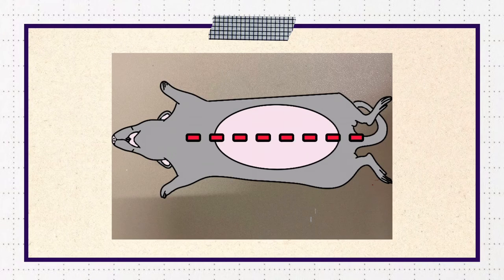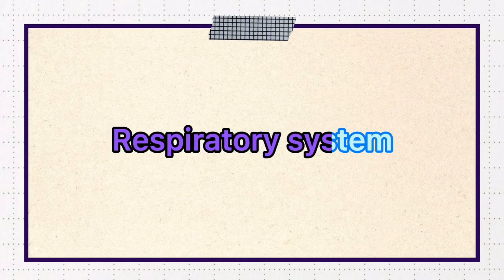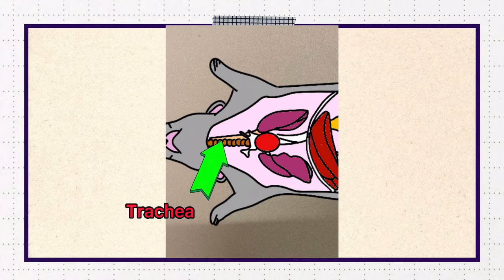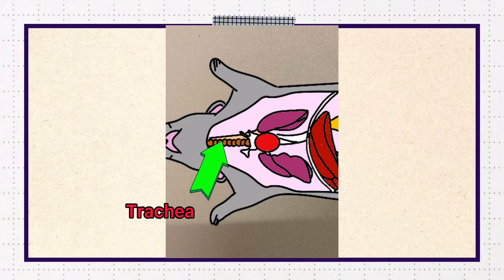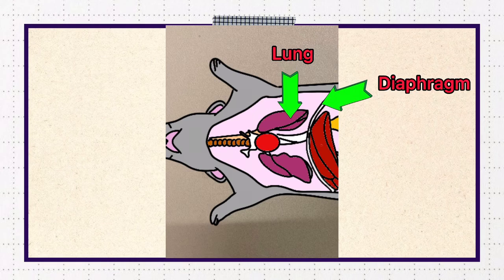After that, we carefully removed the skin and muscles of the rat to expose the organs beneath. Now let's take a look at the respiratory system. There is the trachea, which is the passage for air to pass to the lungs. The trachea is a tube that extends from the neck to the chest, and is wide and lined with cartilage. There are also lungs and a diaphragm, which are also important organs for breathing.